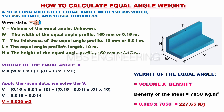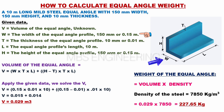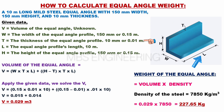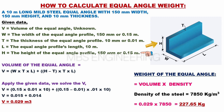Given data: V equals the volume of the equal angle — unknown. W equals the width of the equal angle profile: 150 millimeters or 0.15 meters. T equals the thickness of the equal angle profile: 10 millimeters or 0.01 meters. L equals the equal angle profile's length: 10 meters. H equals the height of the equal angle profile: 150 millimeters or 0.15 meters.